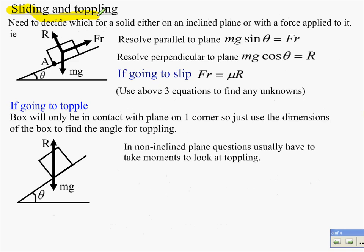Sliding and toppling. Generally in questions, you're going to be looking at finding which one happens first. So you'll probably need to look at both situations and say, look, if it's going to slip, what happens? If it's going to topple, what happens? And in this case, the inclined plane, they'll probably say, look, inclined plane, gradually theta is increasing. What's going to happen? Is it going to slide or topple first?